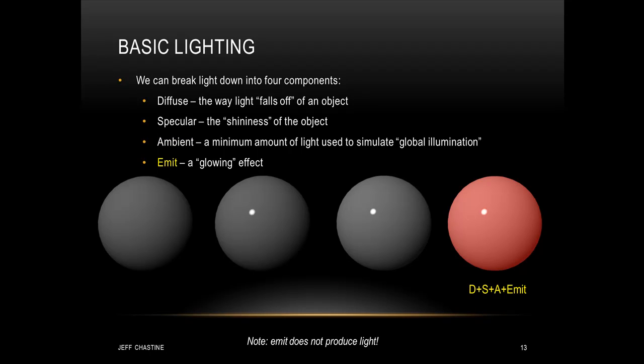The fourth component is called emit, and it's really not used very often, but it provides a glowing effect. Now I've over exaggerated that in the fourth image, just so you can see what it looks like. Now there's an important note here, realize that emit does not actually produce light. In other words, this sphere is not going to illuminate other objects that are in the scene.